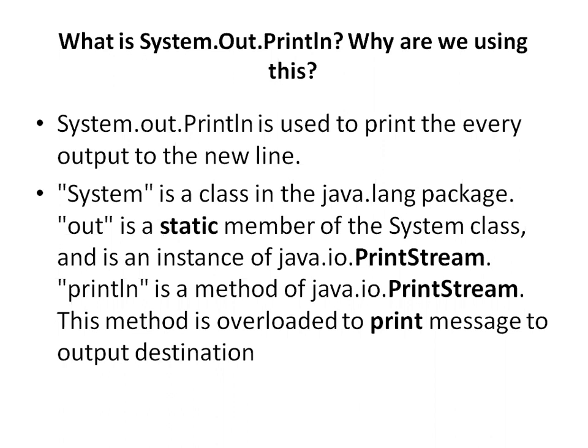The first question usually asked is: what is system.out.println and why are we using it? system.out.println is used to print every output to a new line. They will also ask what each individual part means — system, out, and println. System is a class in the java.lang package. Out is a static member of the System class and is an instance of java.io.PrintStream. println is a method of java.io.PrintStream, and it is overloaded to print a message to the output destination.